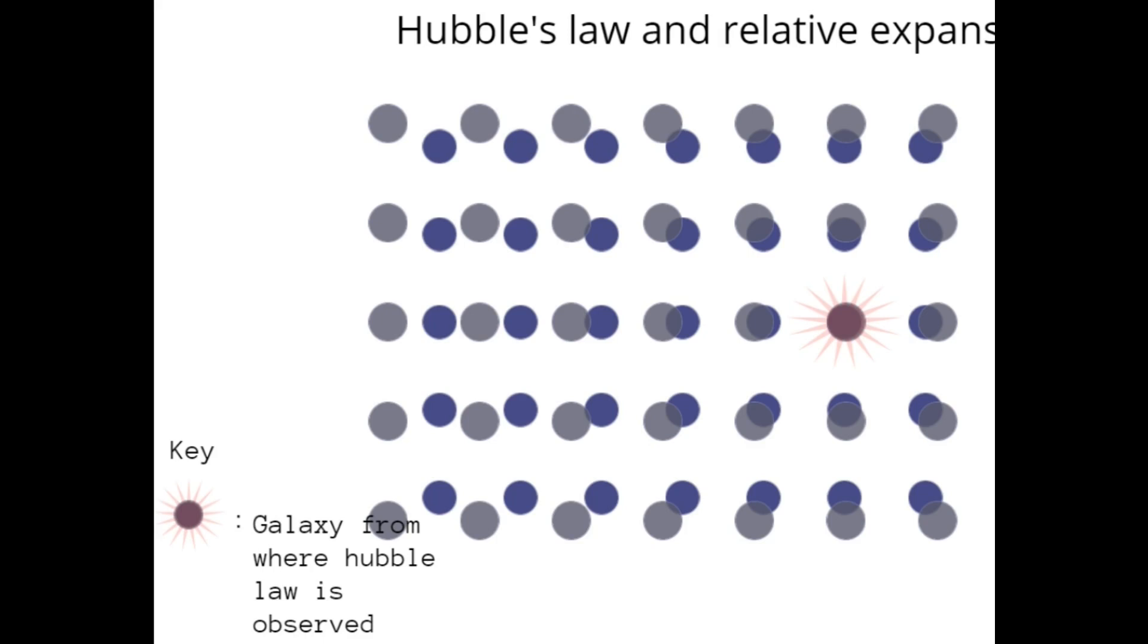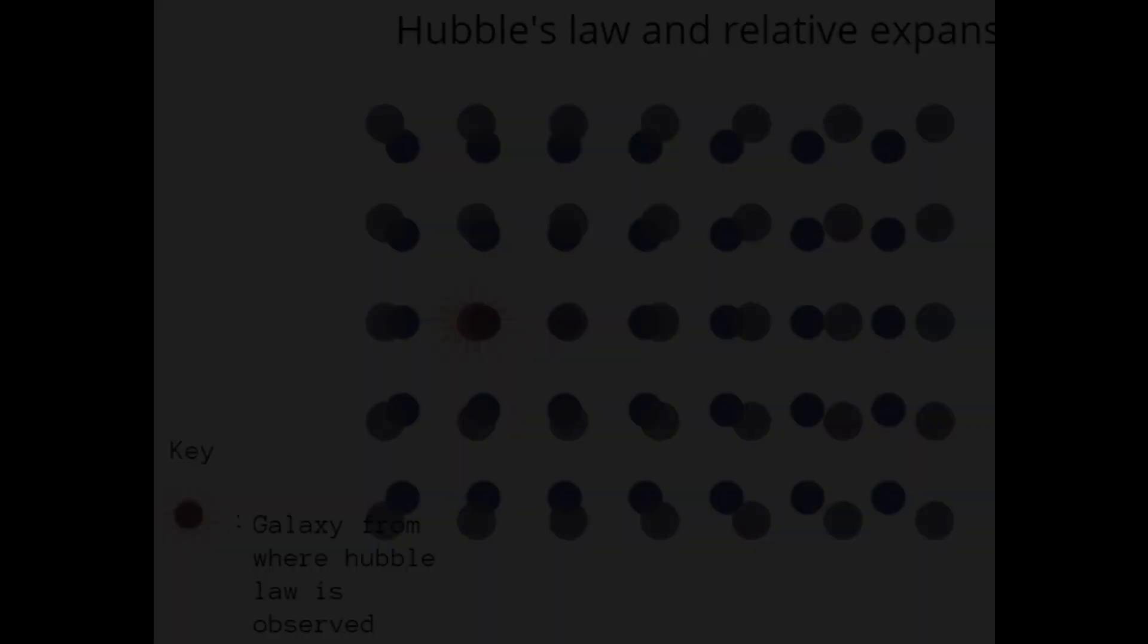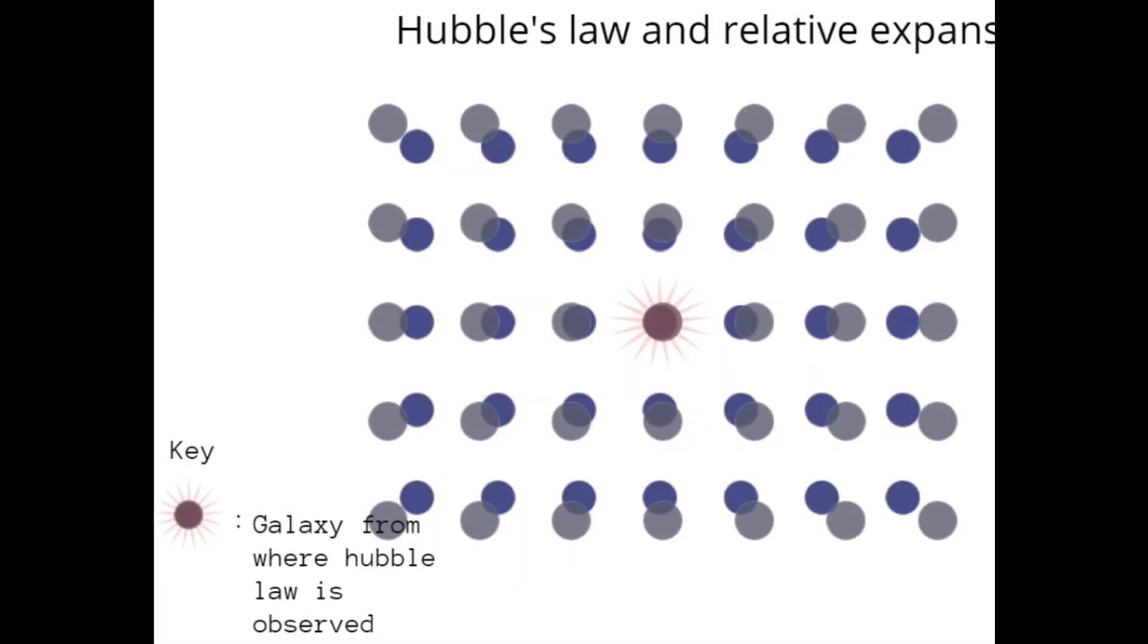With every galaxy in motion, the galaxy on which Hubble was seemed to be static. However, he realized that no matter from where he took his observations, he would have gotten the same results and would have produced the same Hubble's law.